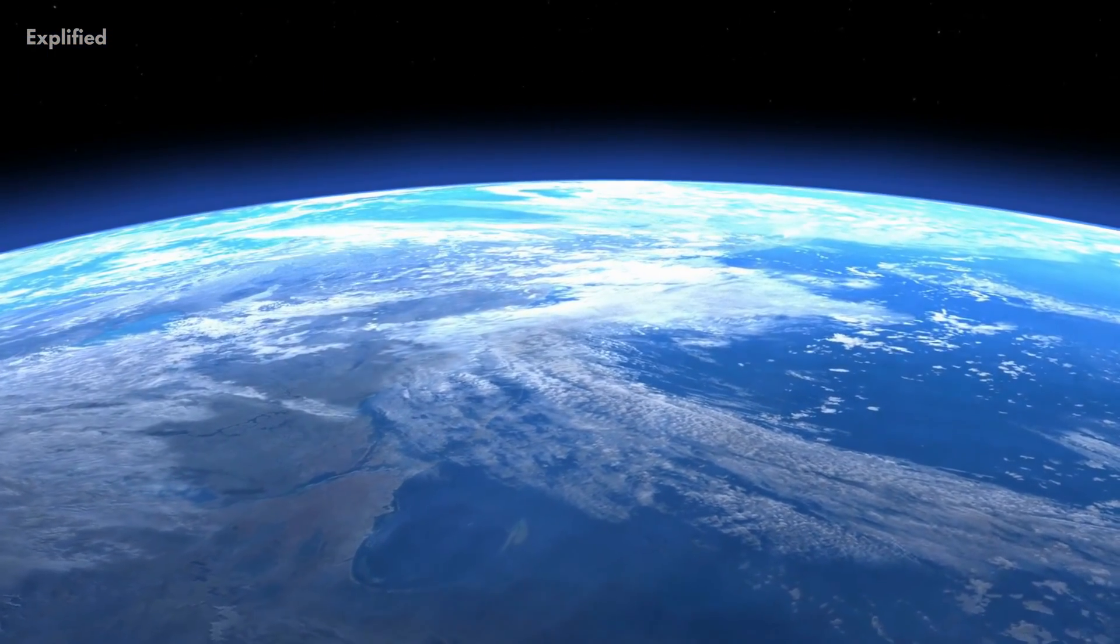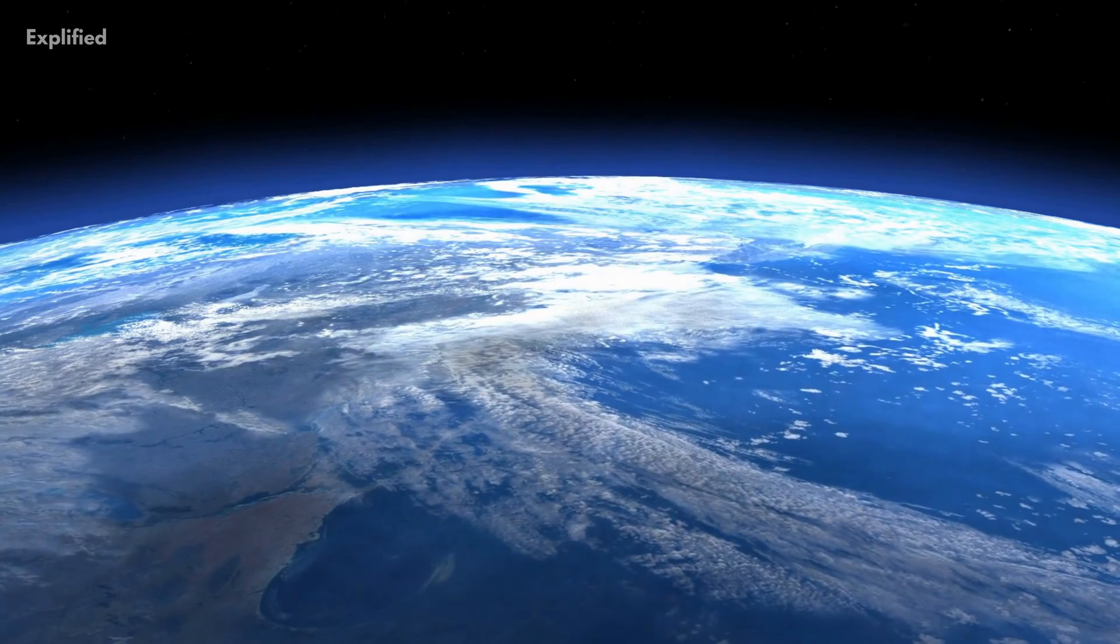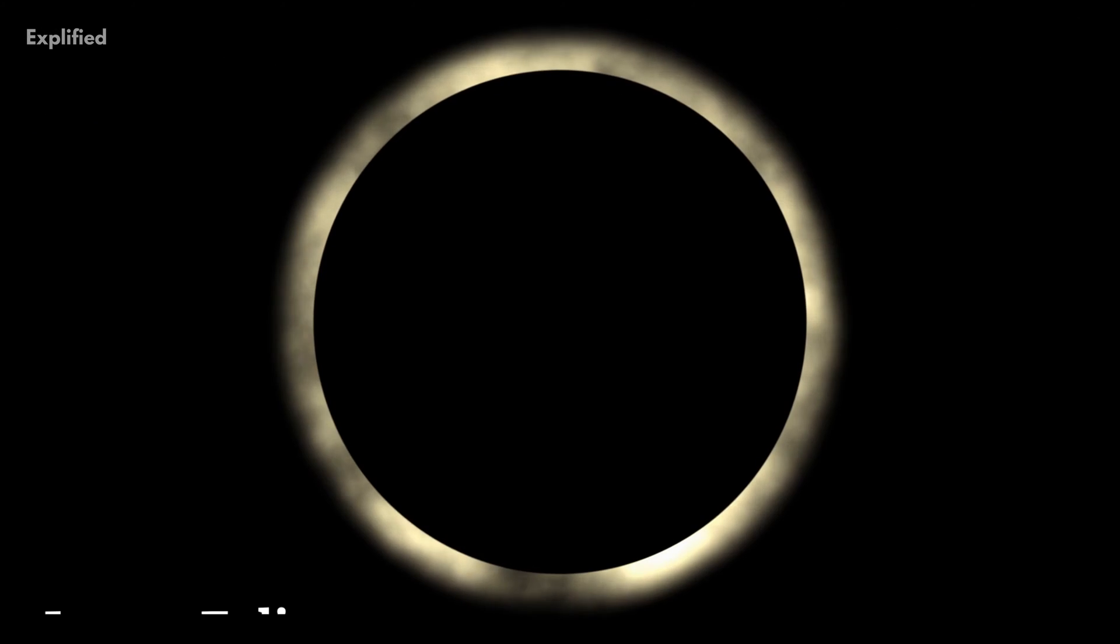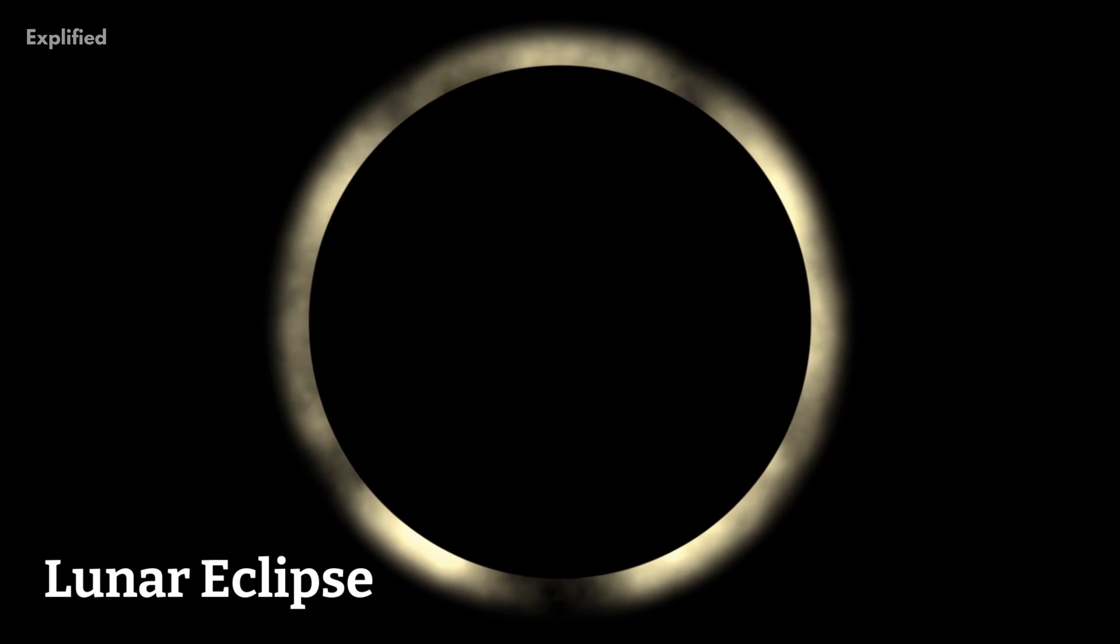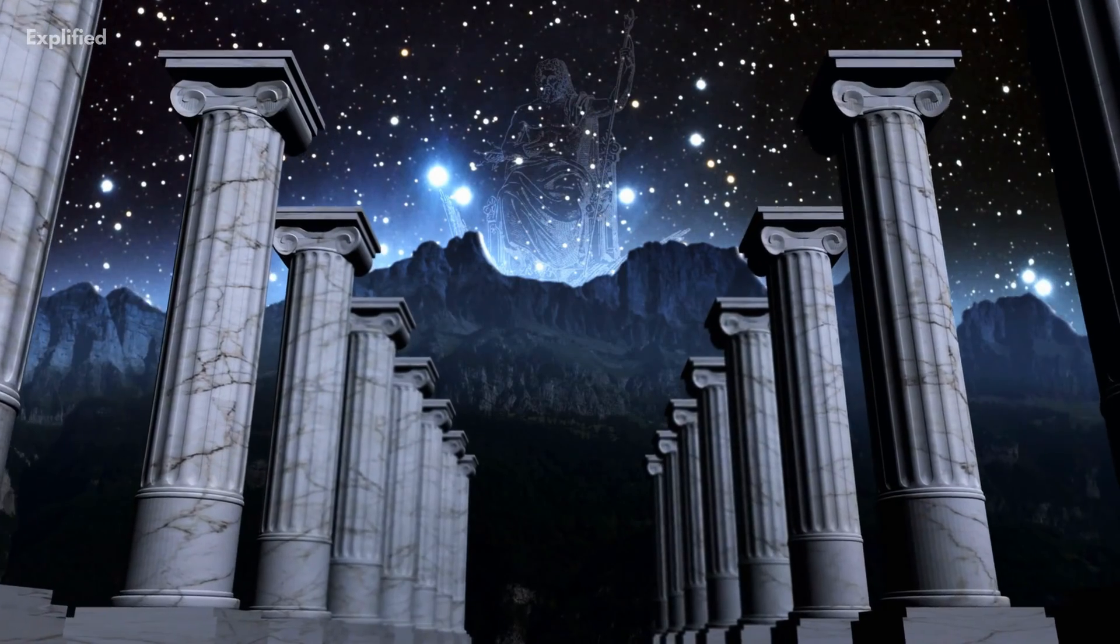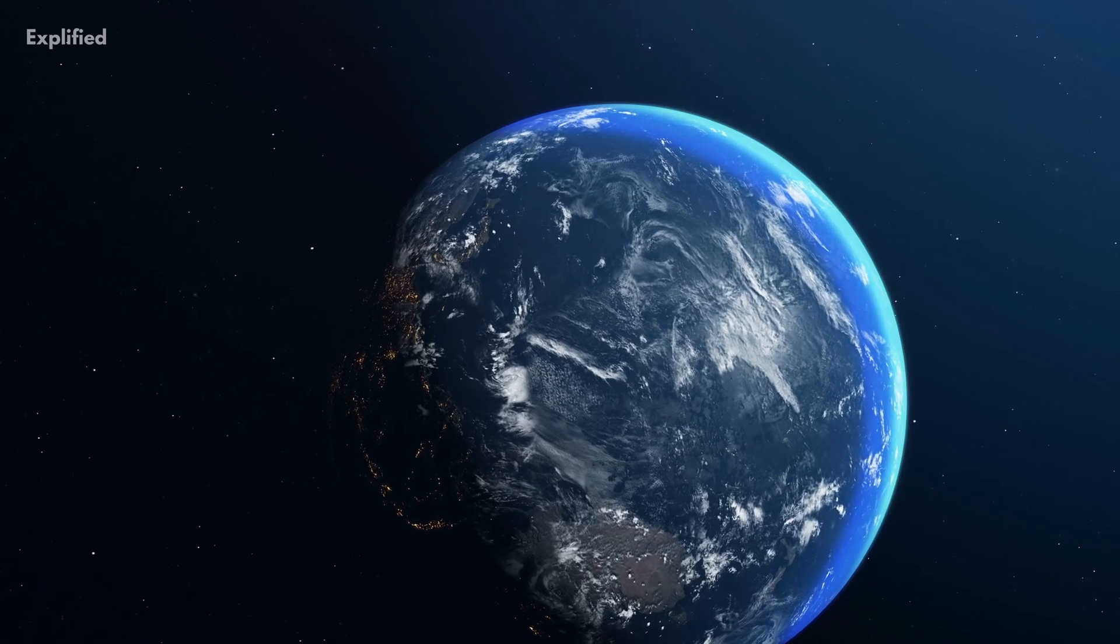Surprisingly, the roundness of the earth has been recognized for almost 2000 years. During a lunar eclipse, the moon seems to form a crescent shape as seen from earth. This led the ancient Greeks to conclude that the earth must be spherical.